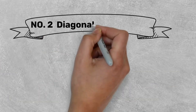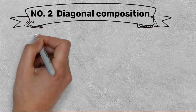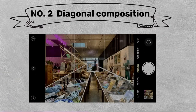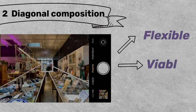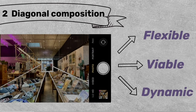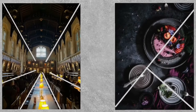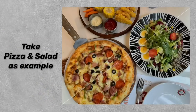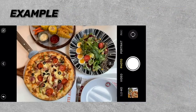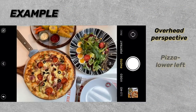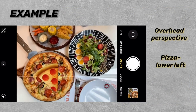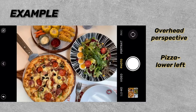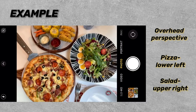The second one is diagonal composition. This method is very flexible, making photographs more lively and dynamic. It is suitable for shooting one or more subjects, such as scenery or food. Take pizza and salad as examples: choose an overhead perspective and place the pizza on the intersection in the lower left corner and the salad on the upper right.